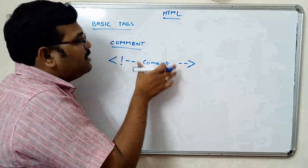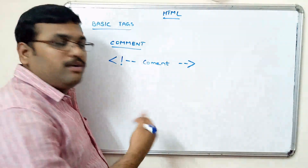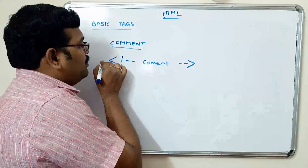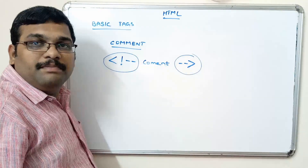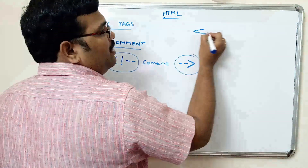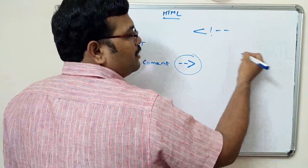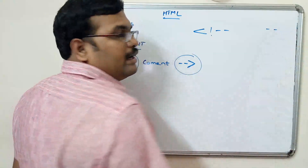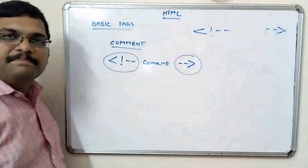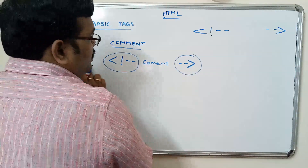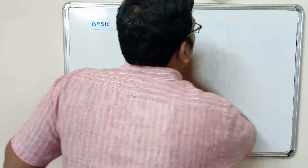The comment syntax is: opening angle bracket, exclamation mark, hyphen hyphen, then write the comment, then hyphen hyphen and close the tag with a greater-than symbol. So this is the structure to write a comment in HTML. Whatever comment we want to write should go in between these two symbols — opening with exclamation mark and hyphens, and closing with hyphens and greater-than.